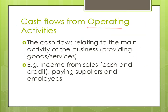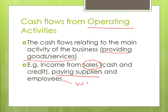When we're looking at operating activities, this is any cash flow related to the provision of goods or services. That includes income from selling your actual good or service, paying your suppliers for stock needed to provide that good or service, and paying your employees — things like wages. Without your employees, you wouldn't be able to operate on a daily basis.